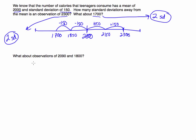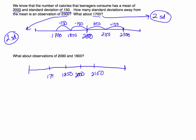So down here, I want to know what about the observations 2,090 and 1,800? Let me just quickly draw this scale again — this number line. I know 2,000 is in the middle. If I add a standard deviation, I'm at 2,150. If I subtract 1, I would be at 1,850. If I do another one, I'm at 1,700. So I'm just quickly drawing up to 2,300. This would be my mean; this is plus 1 standard deviation; this would be plus 2; this is minus 1; this is minus 2. So what I'm going to do is label my number line with the observation of 2,090.